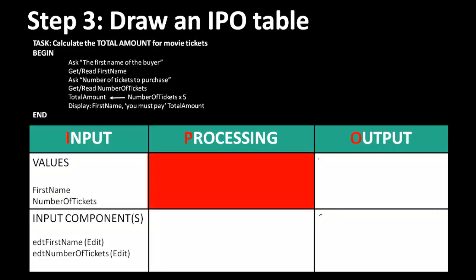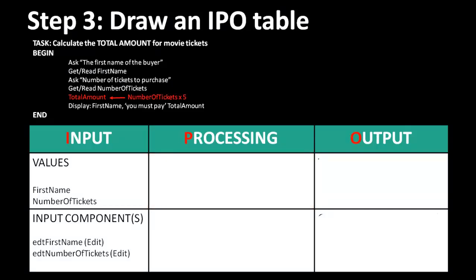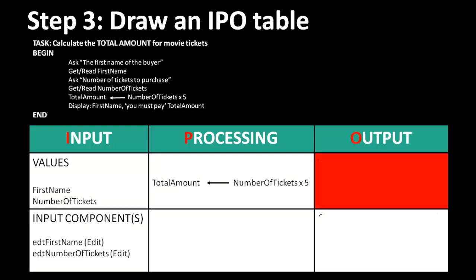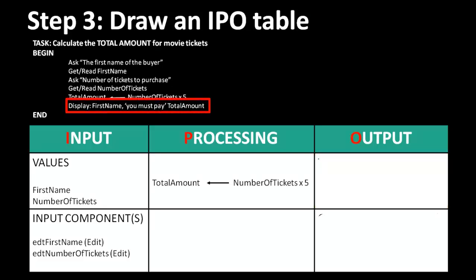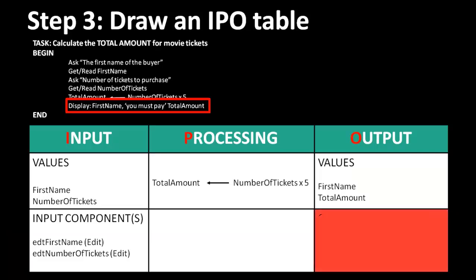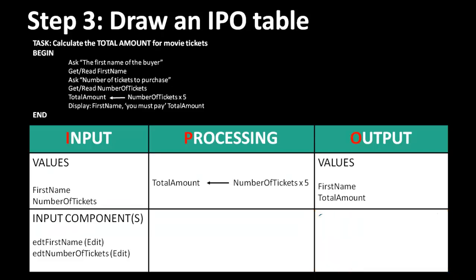Under processing, write down how you will process the input. From the zero code, the instruction is to multiply the value in the number of tickets placeholder by 5, and then assign the result to a placeholder called total amount. So I take that instruction and write it in the processing column. Under output, write the names of the placeholders that will display the output — in this case, the first name and total amount placeholders. Under that, write the name of the component that must display the output. I want to show the output in a panel named pnlResult, so I write pnlResult in that line. And that is how easy it is to draw an IPO table.